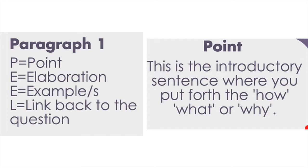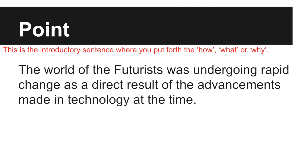In the body, you have an opportunity to clearly explain what you said in your introduction. The paragraph is made up of four main components: the point, elaboration on that point, examples that reinforce what you've elaborated on, and finally sentences that link back to the question. The reader should clearly see how world events shaped futurist ideals. The point is the introductory sentence where you put forth either the how, why, or what — sometimes all three. My point is: 'The world of the futurist was undergoing rapid change as a direct result of the advancements made in technology at the time.' You'll notice this was referenced in slightly different language in the introductory paragraph.